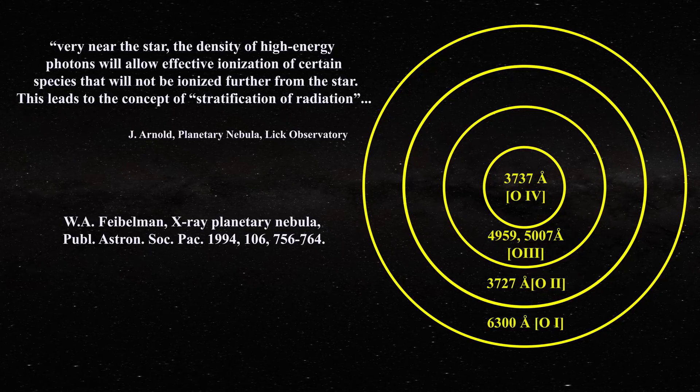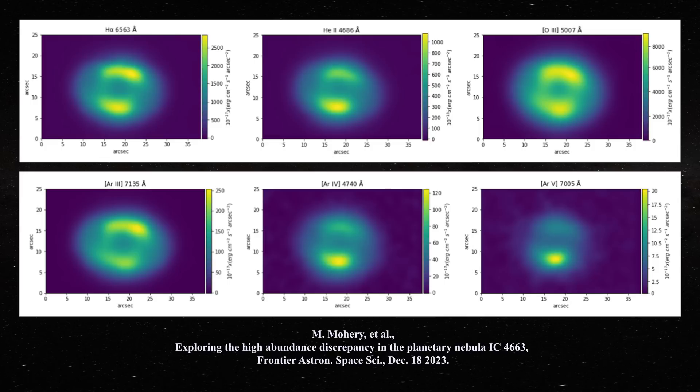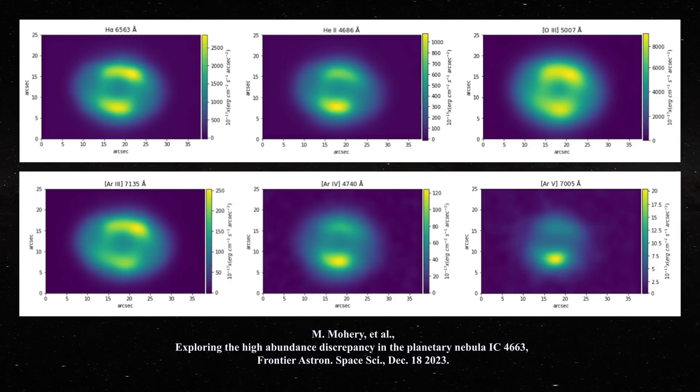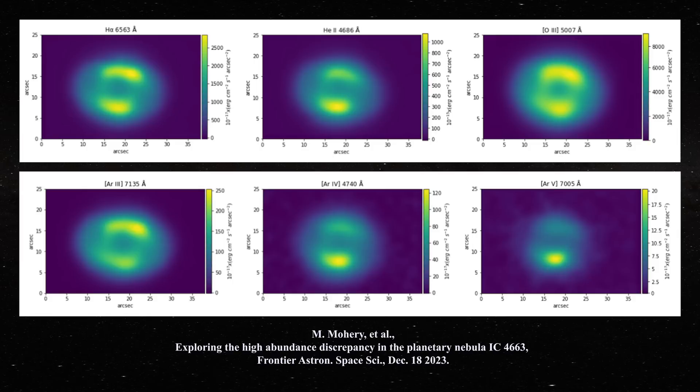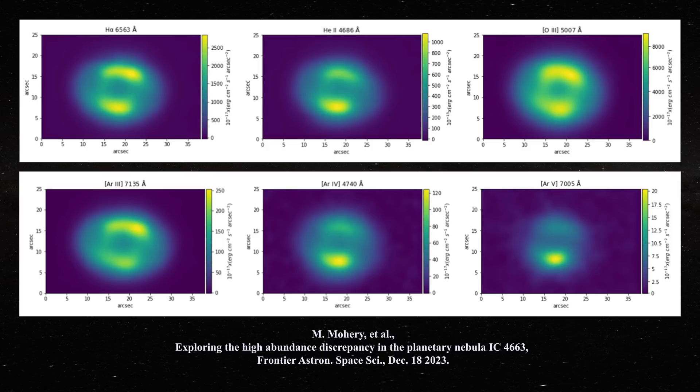To further strengthen the point, examine these images from IC 4663, which are said to confirm stratification of radiation arguments. Clearly, the two elliptical components displayed on these images should not exist if a central star was determining the ionization. Rather, one should obtain spherical symmetry. Furthermore, note that in the Argon 5 image on the lower right, one of the ellipses is much brighter than the other. Once again, this points to locally dominated phenomena, as I highlighted in the previous video. A central star cannot be responsible for this ionization, and this provides clear evidence refuting the claim.